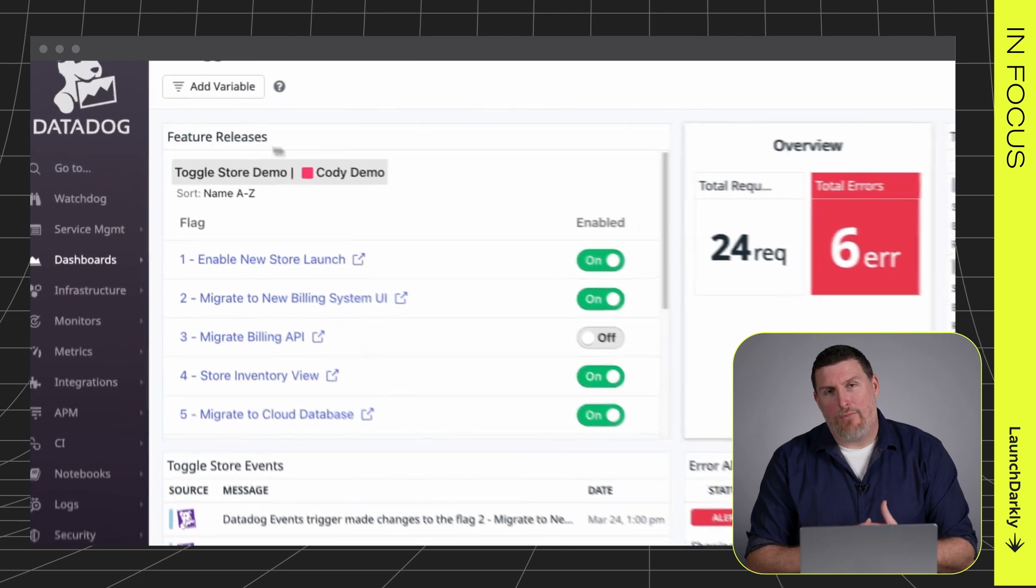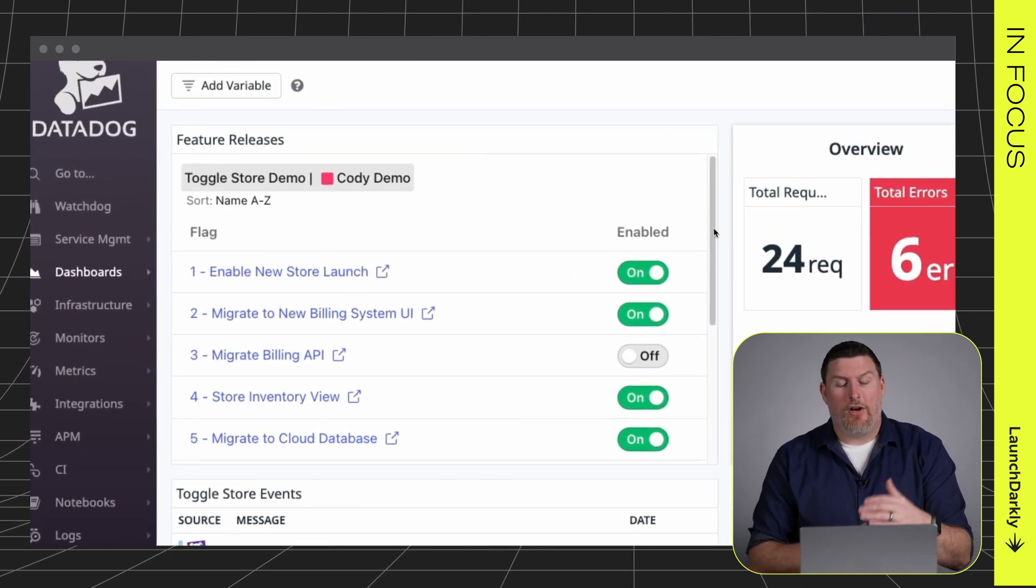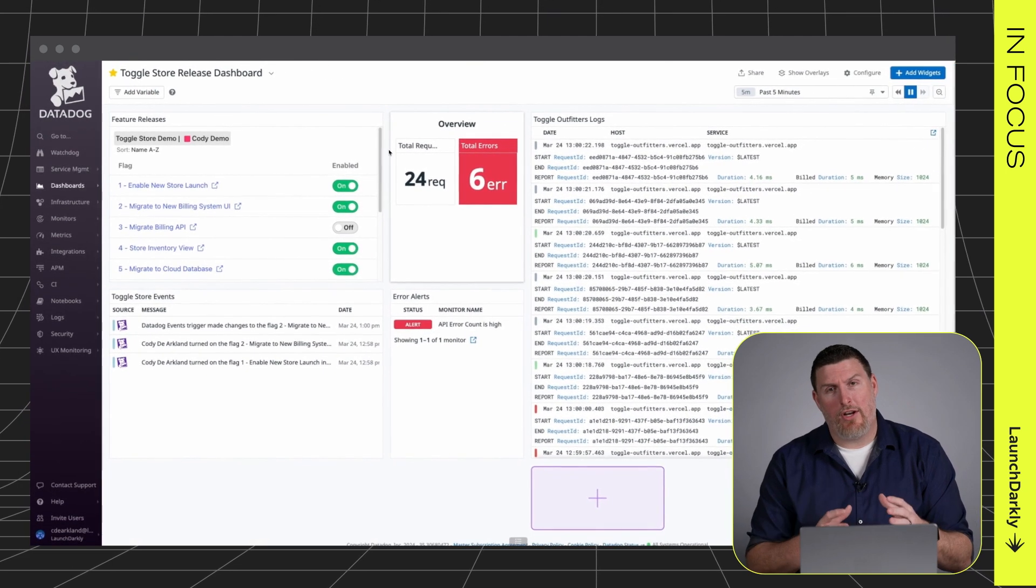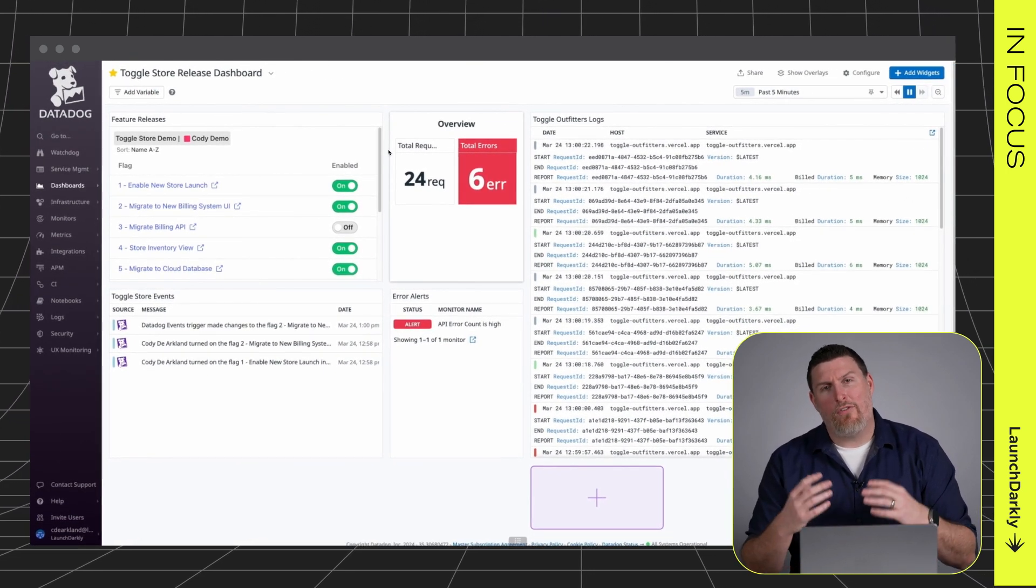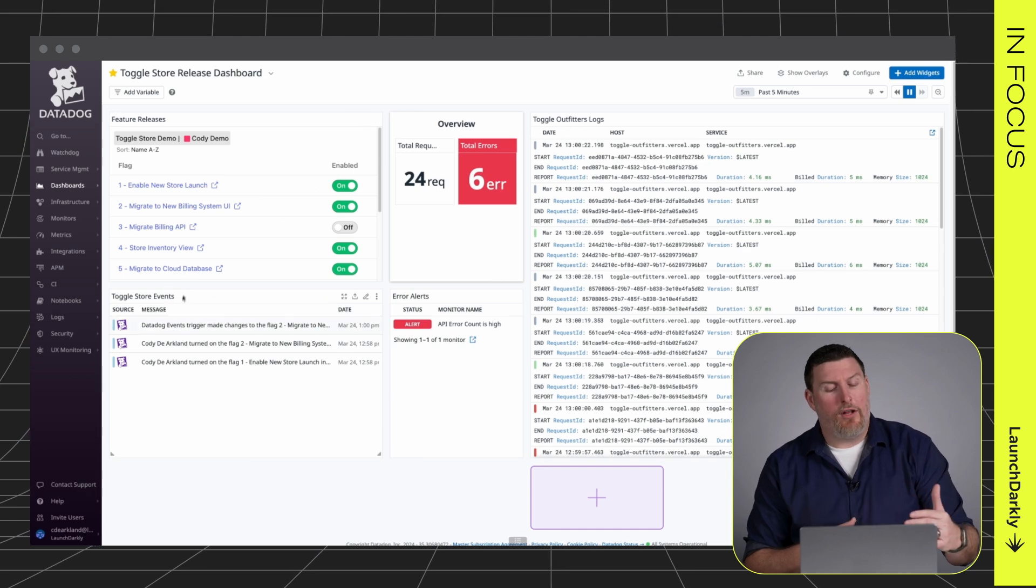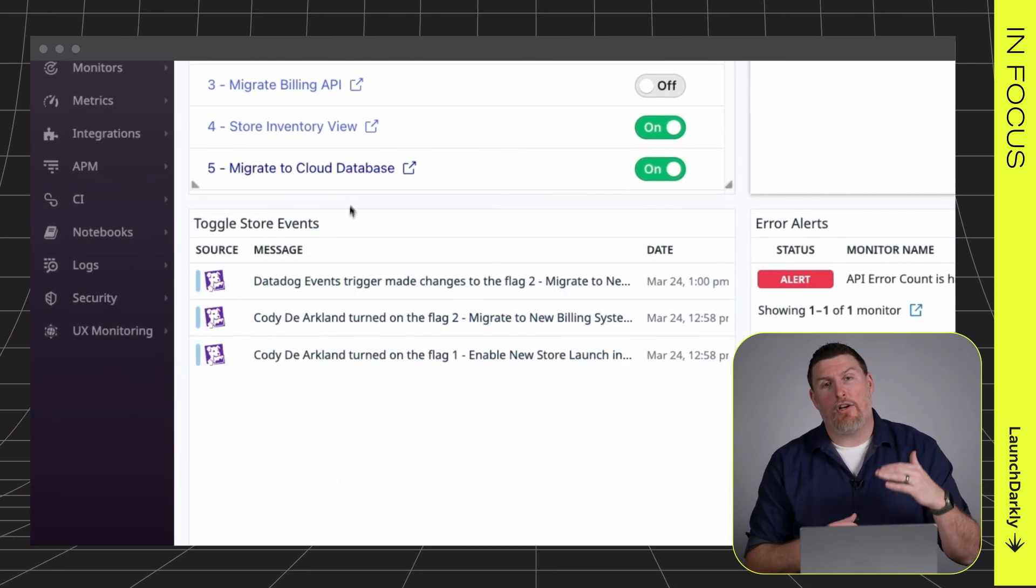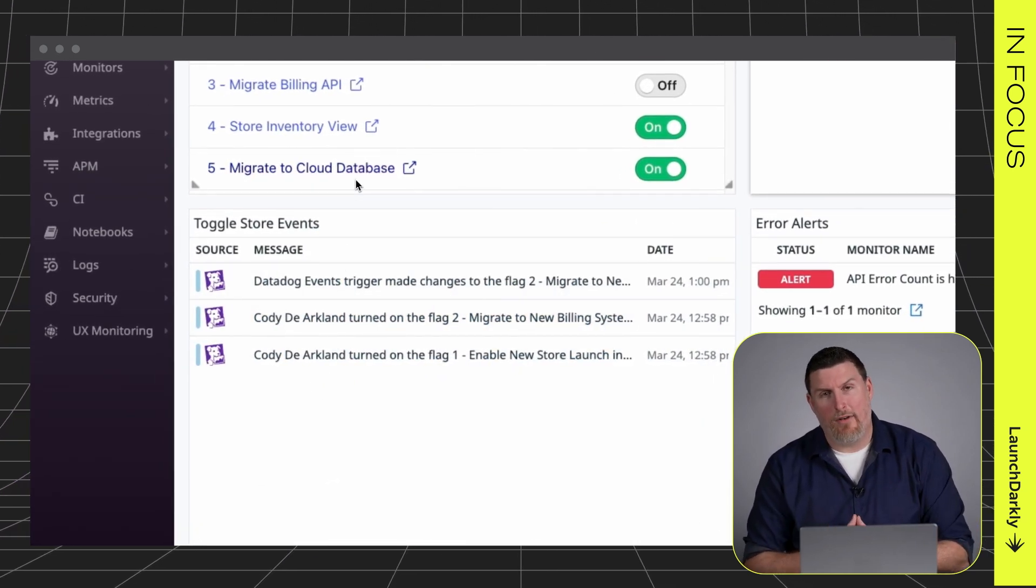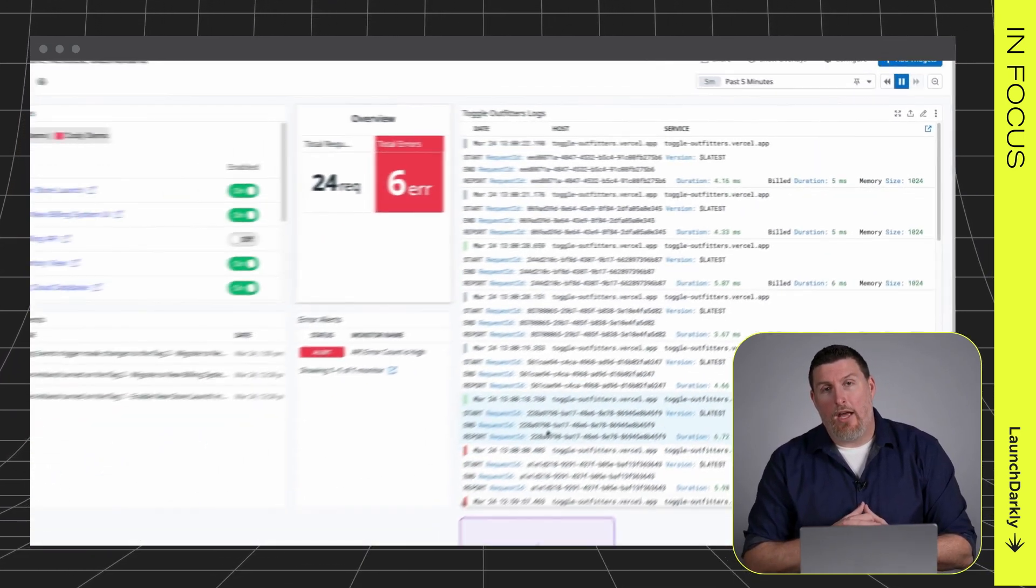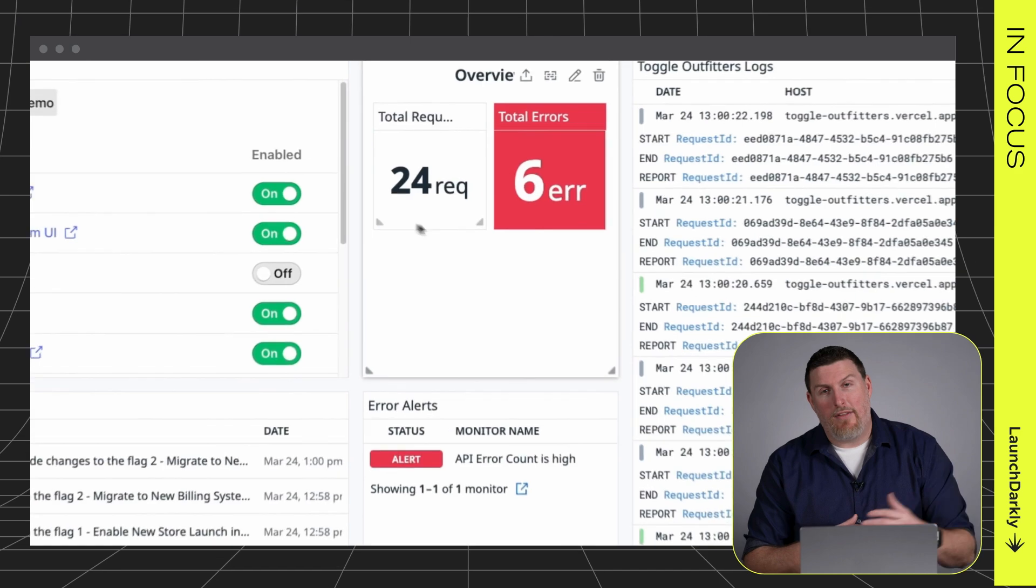Inside of our Datadog dashboard, we can immediately see which features are enabled or disabled from within LaunchDarkly. This brings all of the context of LaunchDarkly into the Datadog dashboards that you're already using. We can see all the events that have happened within LaunchDarkly so you can understand what changes are being made live inside of your environment. We can see your application logs coming from Datadog and any error rates that are happening inside of the environment.